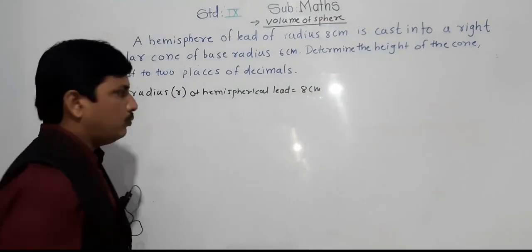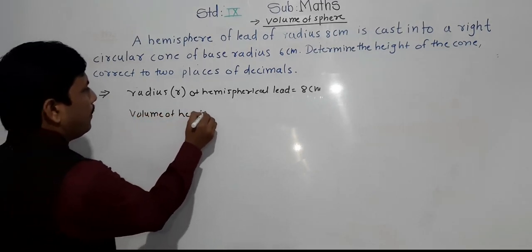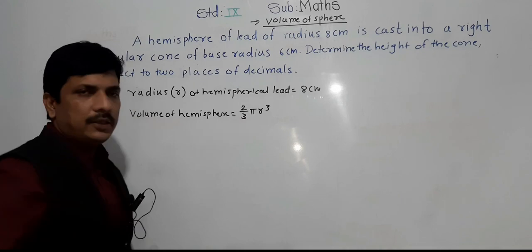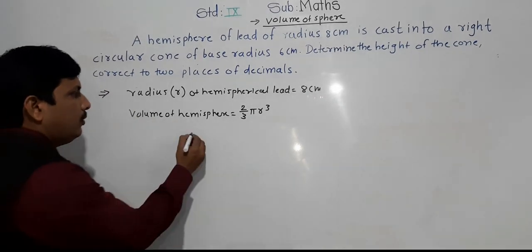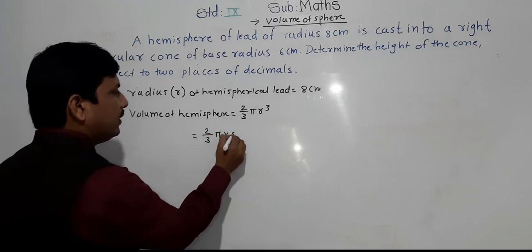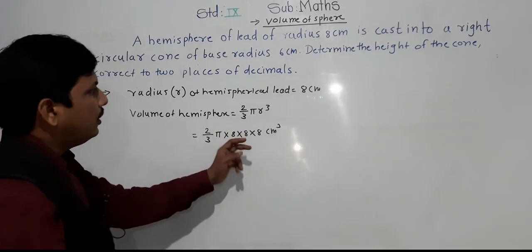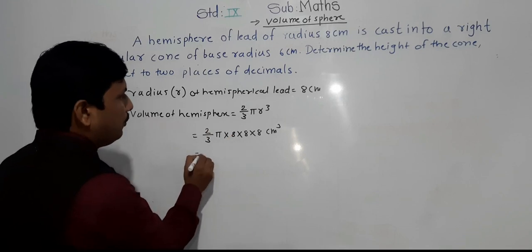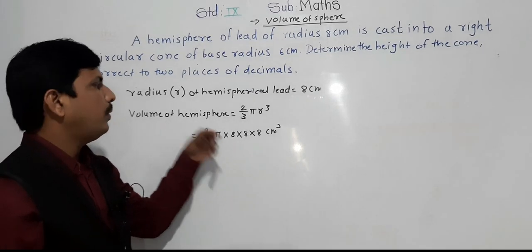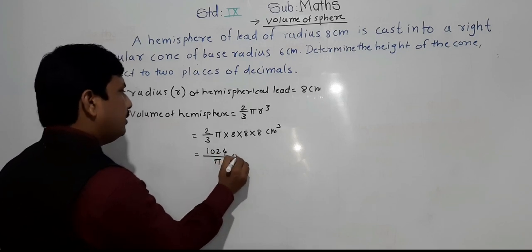We need to find out the volume of the hemisphere. Volume of hemisphere is equals to 2 by 3 pi R cube. So it will be 2 by 3 into pi into 8 into 8 into 8 centimeter cube. The cube of 8 is 512. So 512 into 2 is 1024, giving 1024 pi upon 3 centimeter cube.